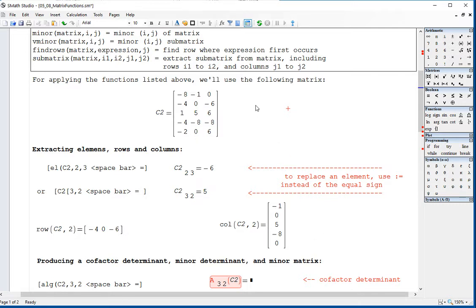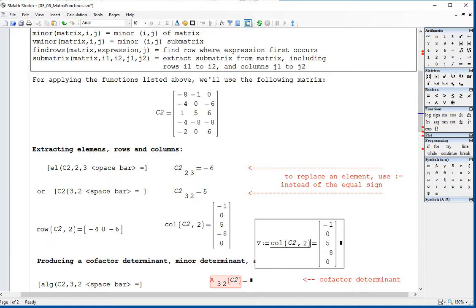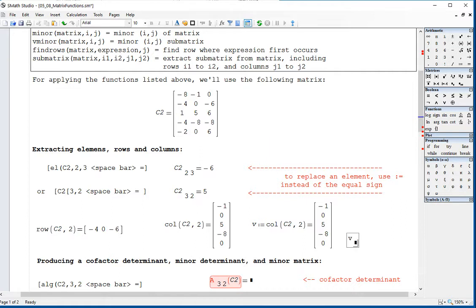If we had a vector, we can extract elements of the vector too. So suppose that we have defined, I'm going to copy this, I'm going to move this to the left and call it V. So I'm defining that vector, if I want to extract an element from that vector, I could say EL, V, let's say the fourth. The fourth element would be the negative 8.